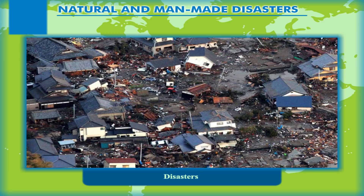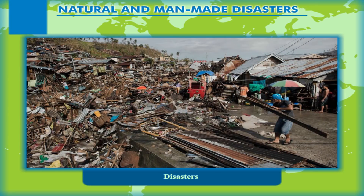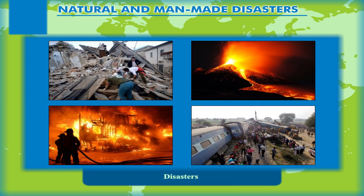Disasters. When a hazard, whether natural or man-made, affects a large section of society or community, it is called a disaster. Disasters can occur anywhere and they do not discriminate between people. Therefore, it is best to know about them and learn to minimize the extent of damage caused by them. The first step towards this goal is to know the various possible disasters and their types.